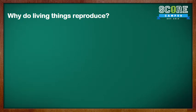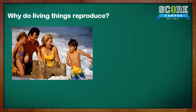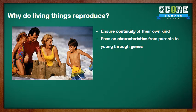Firstly, let's look at why living things reproduce. I have actually covered this segment in the previous topic, so this is a very quick and short revision. Living things reproduce to ensure continuity of their own kind and prevent them from getting extinct. Living things pass on characteristics from parents to their young through genes. Many times the young do not look like the parents, but eventually they do as they grow.